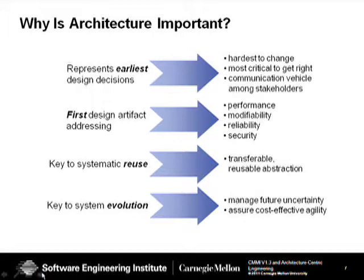Those early decisions are the hardest to change and the most critical to get right, because you're charting a path that could lead to expensive rework if you take the wrong direction. Software architecture and system architecture turn out to be an excellent communication vehicle among stakeholders — a great way to start thinking about what we mean by what we want in our systems.